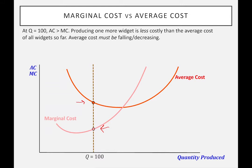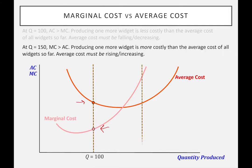On the other hand, if we look at a situation where they're producing 150 widgets, in which case the next widget they produce — the 151st widget — is greater than the average up to 150. In this case, necessarily, the average cost curve has to be rising or increasing.